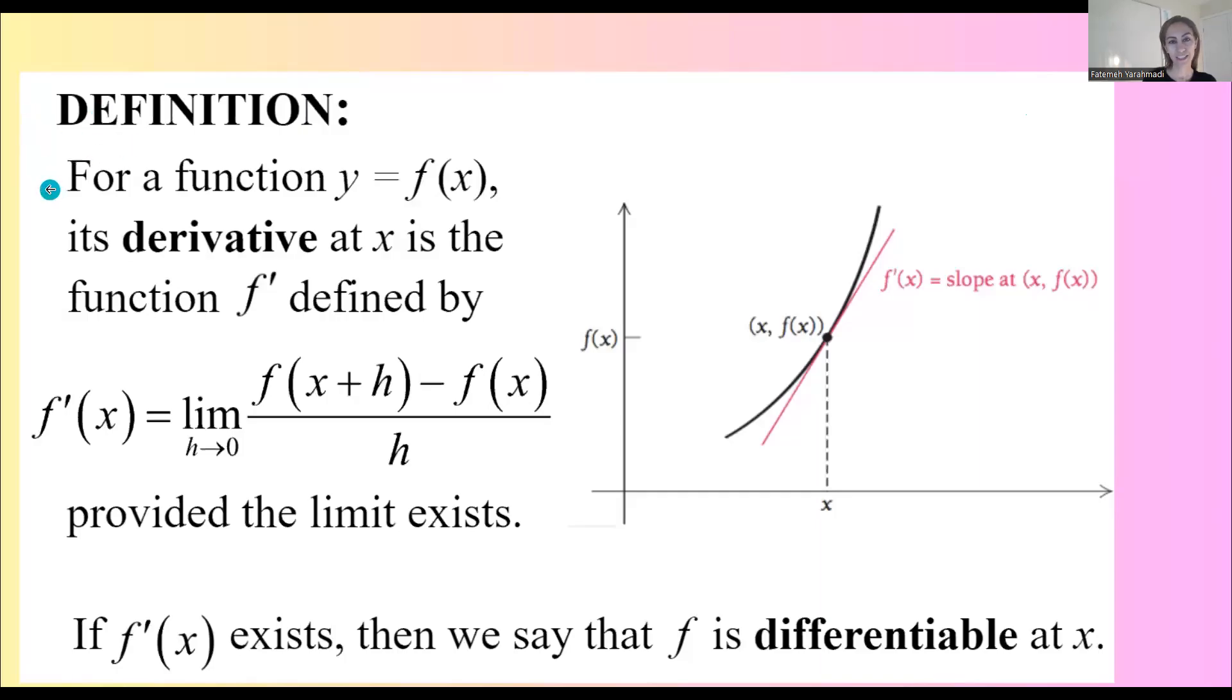Definition: for a function y equals f of x, we can define the derivative of the function using the limit of a quotient. The derivative is denoted by f prime.